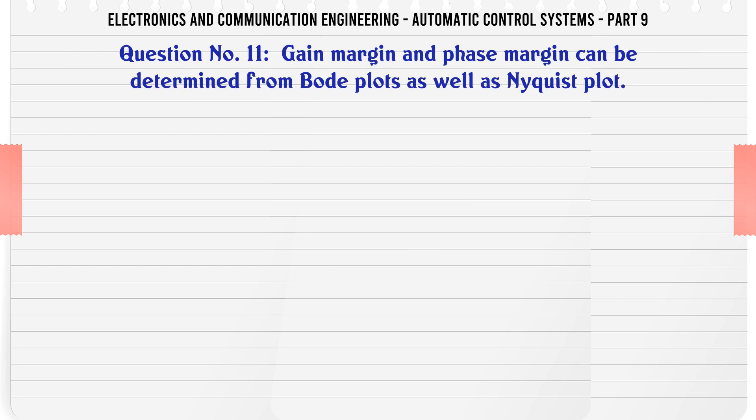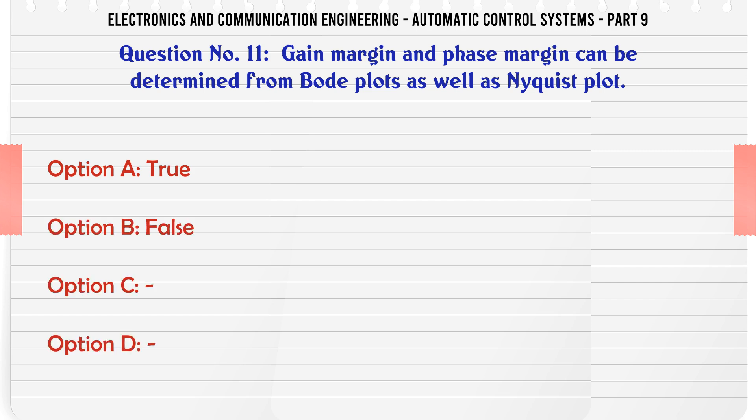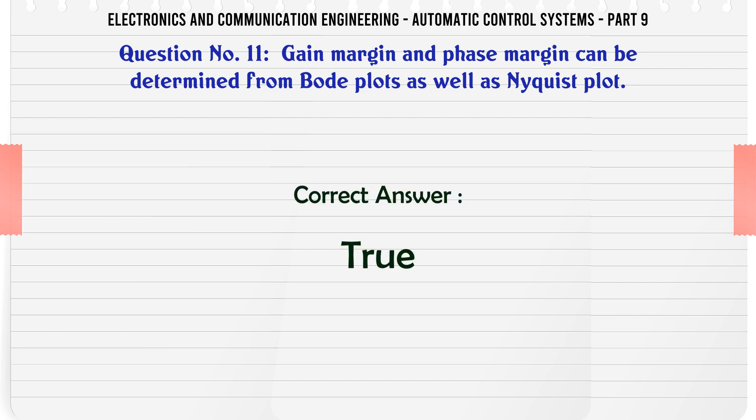Gain margin and phase margin can be determined from Bode plots as well as Nyquist plots. A. True, B. False. The correct answer is: True.